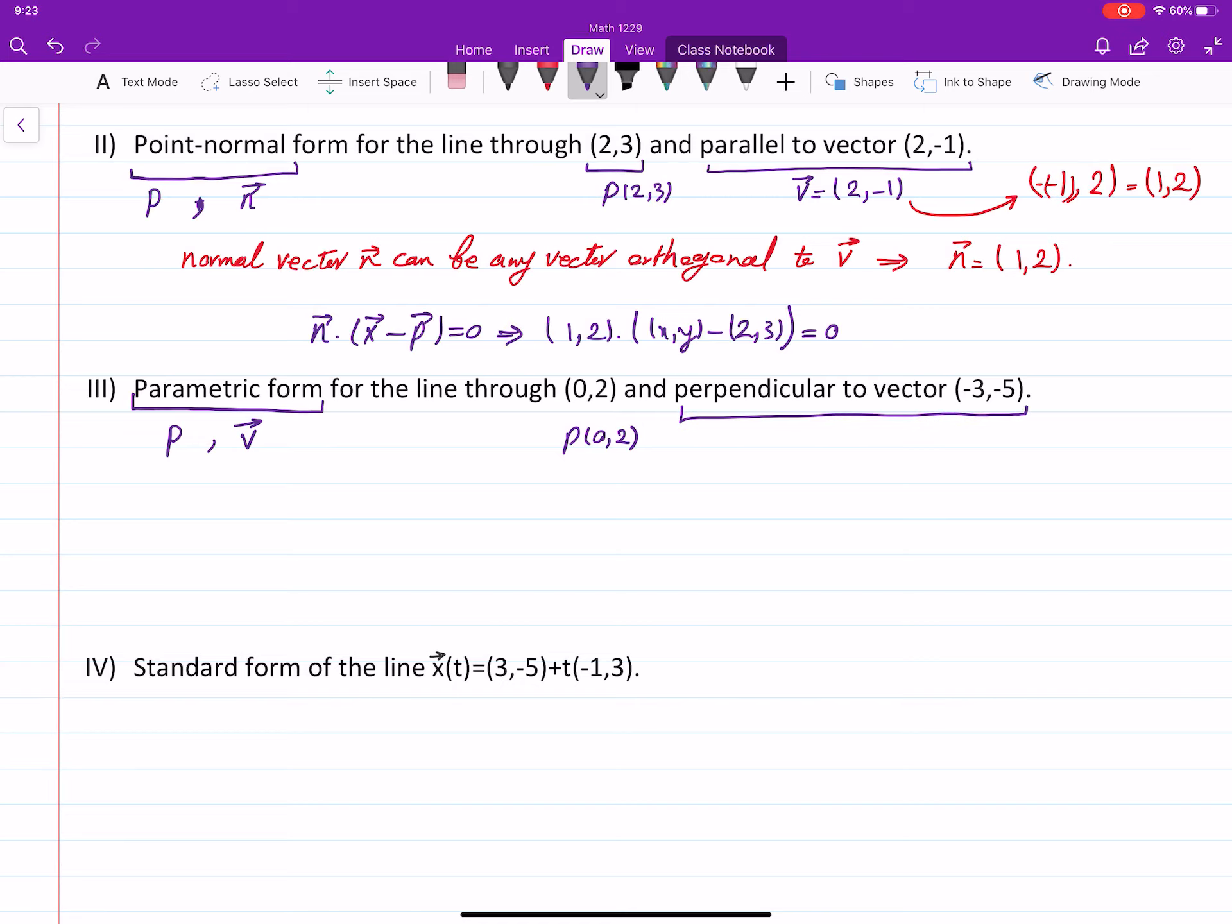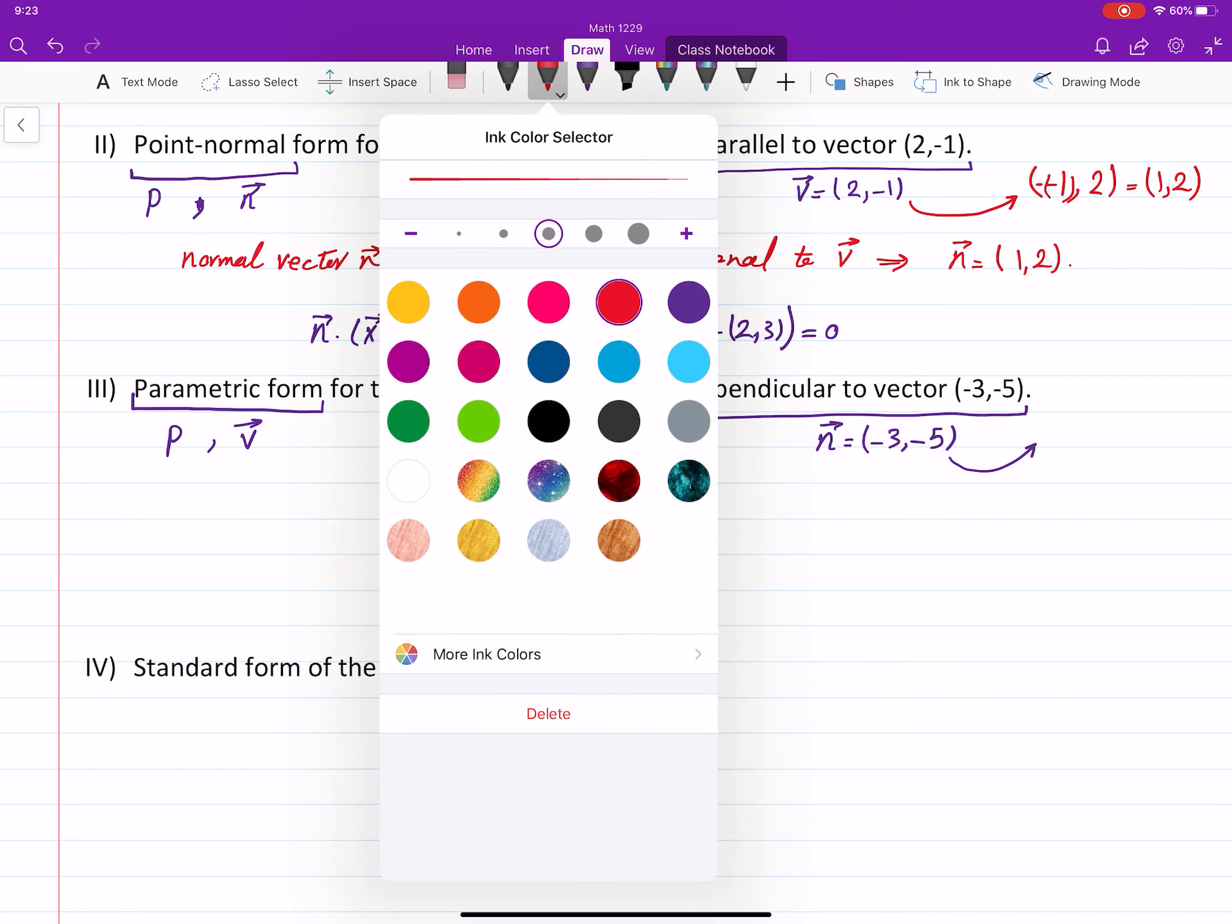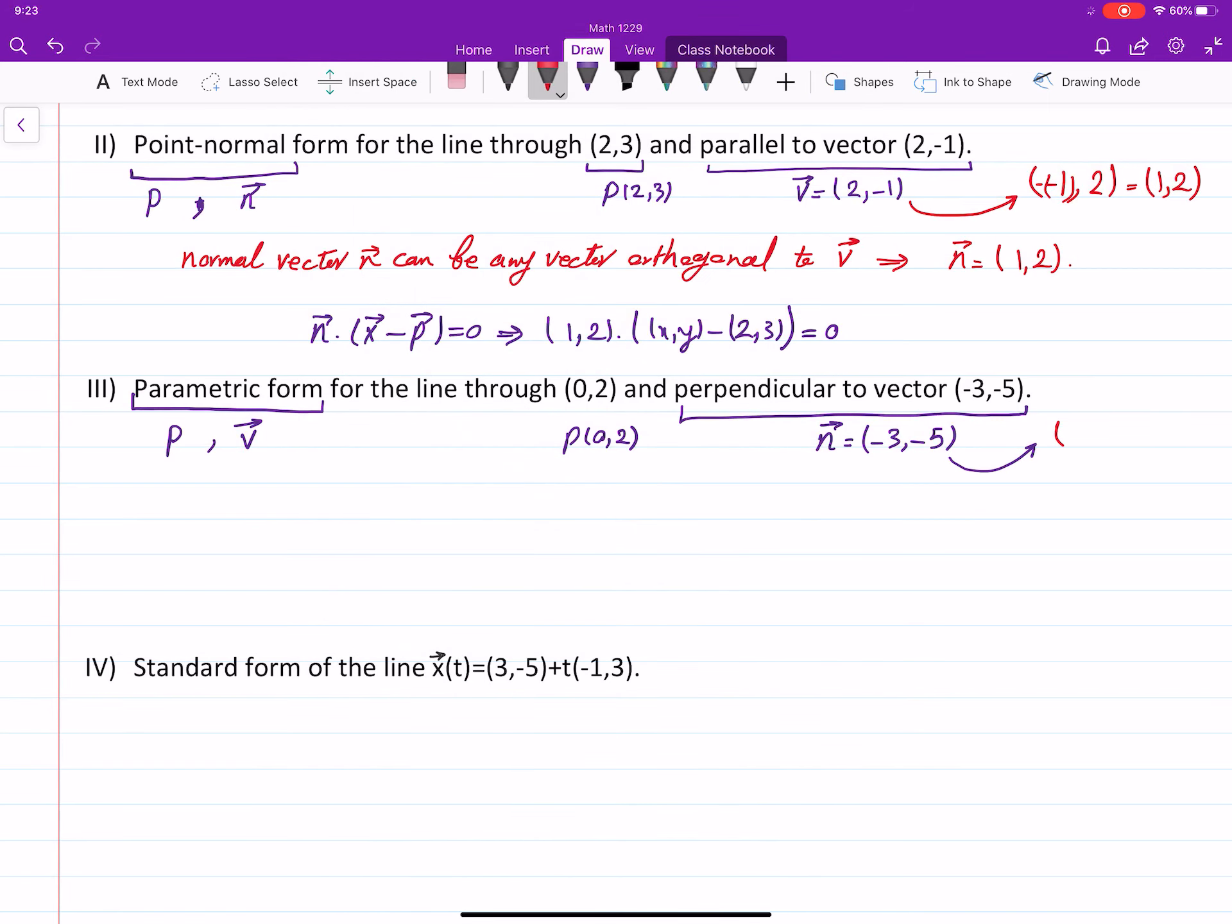But instead of a parallel vector, a perpendicular vector is given. Well, again, if I follow the notation, always use the perpendicular vector, we denote it by negative 3 and 5. Now, this is, as we did in the previous part, always from going a vector to a vector which is orthogonal to that in R2, this is what you need to do. So you switch the components and multiply one of them by negative sign.